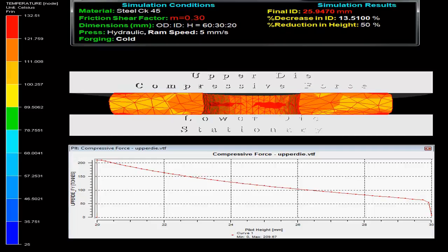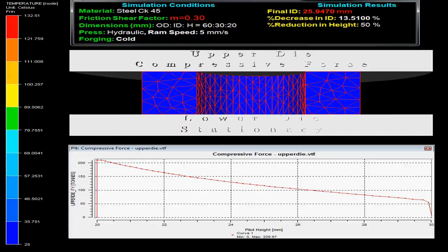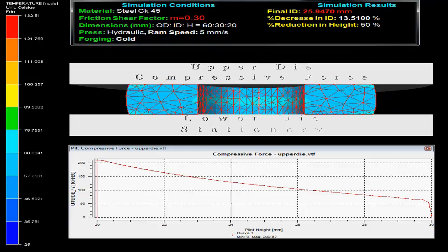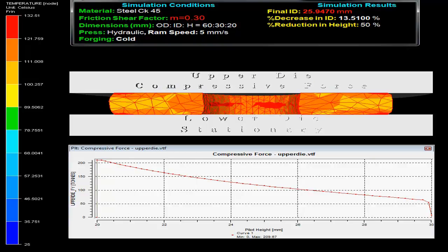At the bottom, the graph between force on upper die versus pilot height is shown. The temperature evolved during the process can be compared with the help of the scale given on the left side.